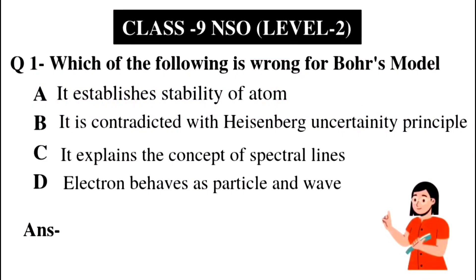Question number 1: which of the following is wrong for Bohr's model? Option A: it establishes stability of atom. Option B: it is contradicted with Heisenberg uncertainty principle. Option C: it explains the concept of spectral lines. Option D: electron behaves as particle and wave.